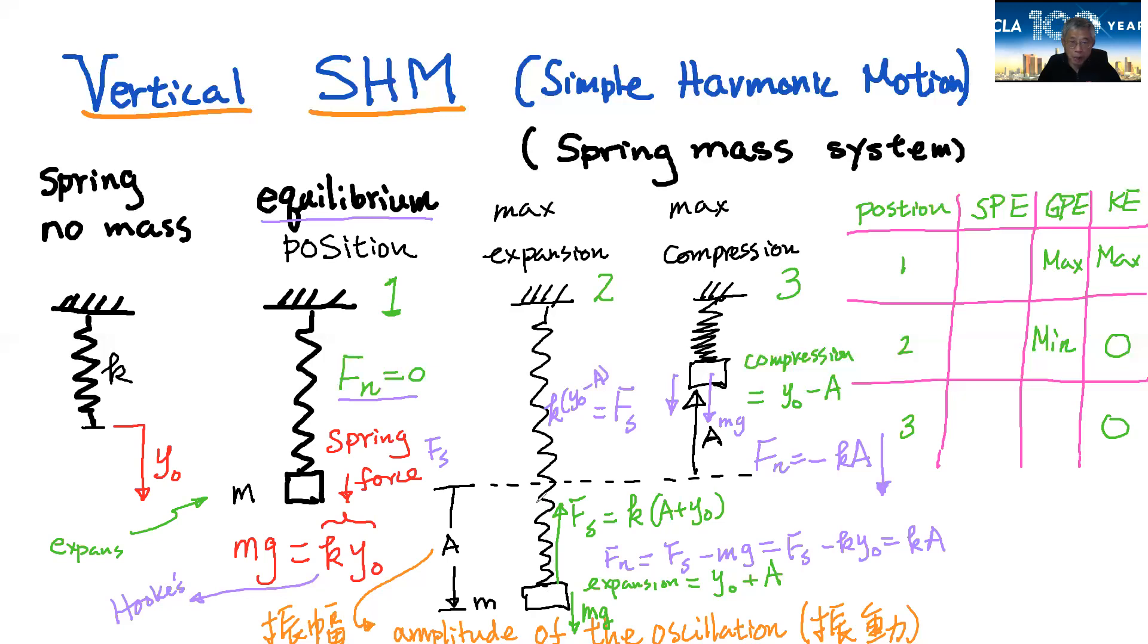And then you let it go. So once you let it go, it will come back to this equilibrium position, which would then have the maximum velocity. Because at that point, you have the spring potential energy converted back to the kinetic energy. And as you push further up, now you will slow down again until you come to this position three.